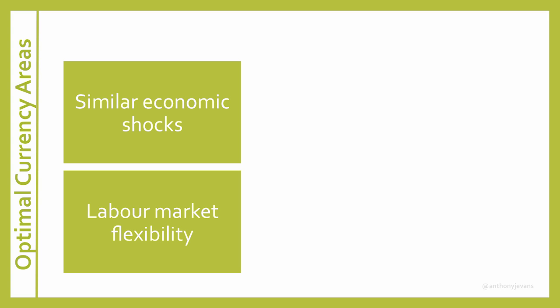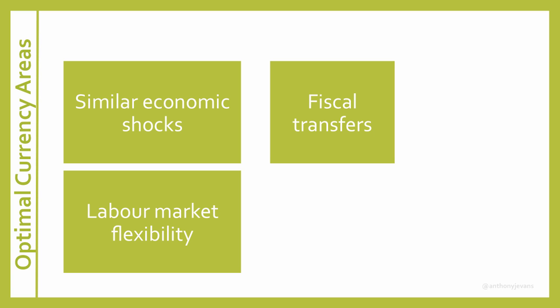The third main criteria is fiscal transfers. In the UK, for example, when there's growth in London, money gets redistributed to poorer regions through welfare payments. And indeed, many people have argued that the problem in the Eurozone is that there's monetary union without fiscal union.